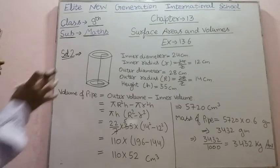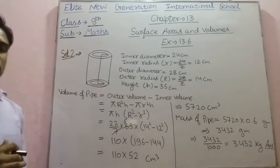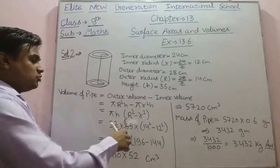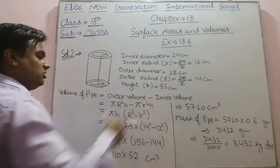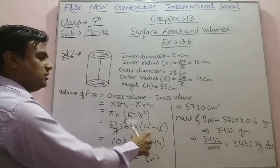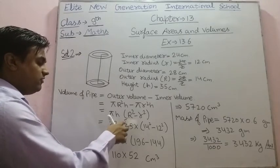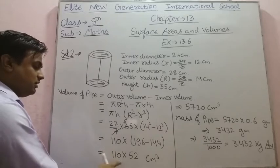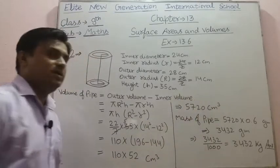First we find the volume of wood used in the pipe: outer volume minus inner volume = π(R² - r²)h. Taking π and h common: (22/7) × 35 × (14² - 12²). Here 35/7 = 5, so 22 × 5 = 110. Then 196 - 144 = 52. So 110 × 52 = 5720 centimeter cube. That is the volume of wood.